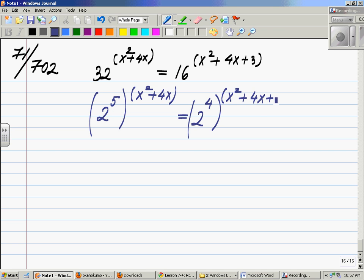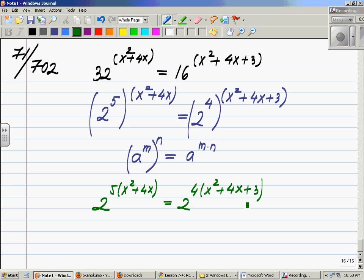Now we know from yesterday that one of the laws of exponents said if I have a to the power of m, everything to the power of n, will be a to the power of m times n. We'll apply that to our expressions here, which means I have 2 to the power of 5 times x squared plus 4x equals 2 to the power of 4 times x squared plus 4x plus 3.